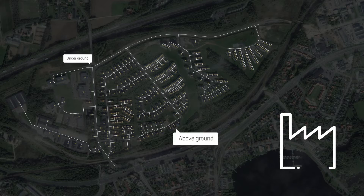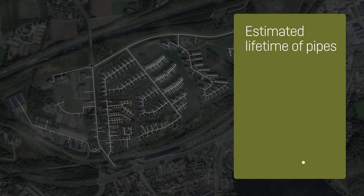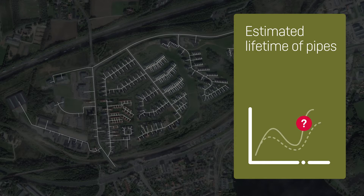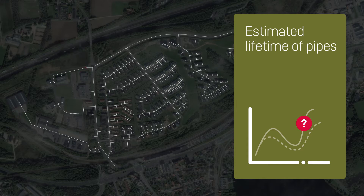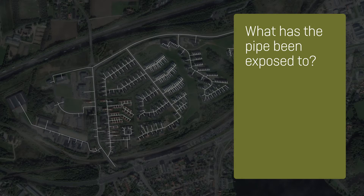Let's look at pipes as an example. The estimated lifetime of the pipes in your network is based on theory, but the age of the pipe is not necessarily the best, or at least not the only, indicator of its condition. Without knowing what the pipe has actually been exposed to — in terms of temperature, pressure, and flow — you run the risk of digging in the dark.